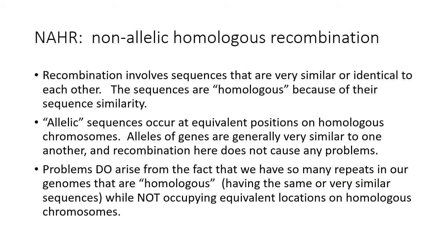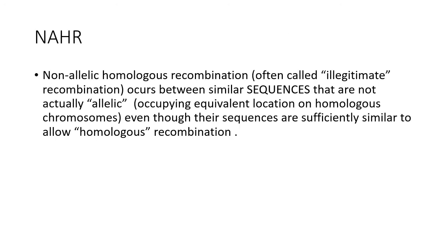Non-allelic means you're going to exchange sequences because of their sequence similarity, so they're homologous in that sense, but they're not allelic to each other — they do not occupy equivalent positions on homologous chromosomes. We will have repeats in our genomes that can have exchange events leading to abnormal chromosomes and various illnesses. This is also called illegitimate recombination — the sequences are not actually allelic to each other, although they are sufficiently similar to allow so-called homologous recombination.